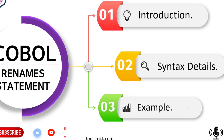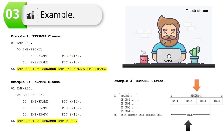Now let's look at COBOL rename examples. In the first example, I am regrouping employee first name and last name variables under a new variable called employee personal information. I have defined a record called EMPLOYEE-REC, under that EMPLOYEE-REC-LAYOUT, then EMPLOYEE-FIRST-NAME and EMPLOYEE-LAST-NAME.